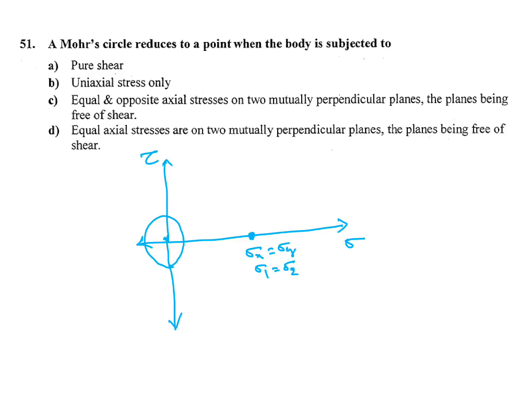Equal and opposite axial stresses on two mutually perpendicular planes being free of shear. This is also not possible if both are not same. Equal axial stresses are on two mutually perpendicular planes, planes being free of shear. For example, let its value be sigma tensile. Here also sigma, so all values will be sigma and Mohr's circle will become a point.